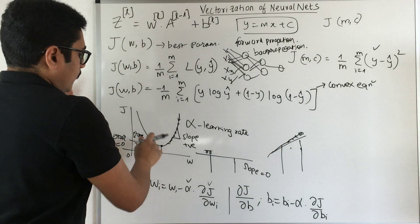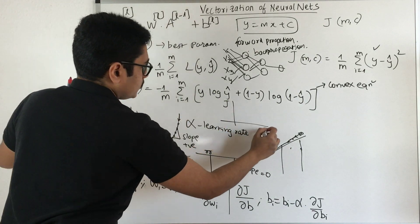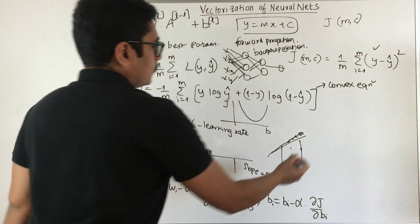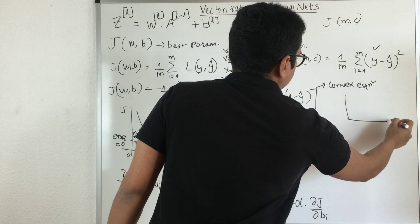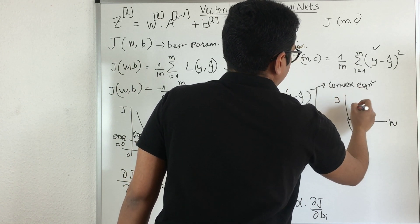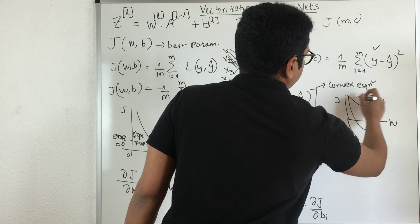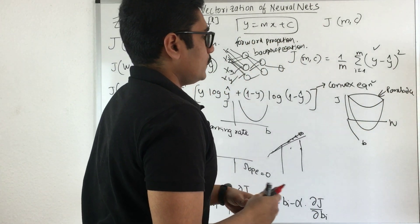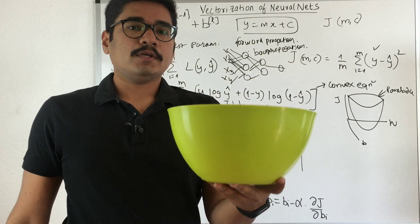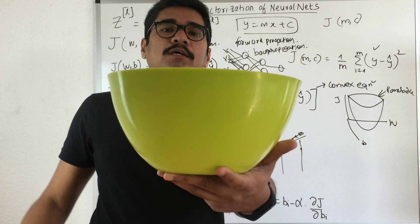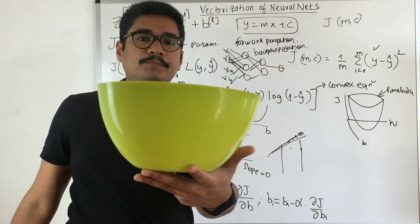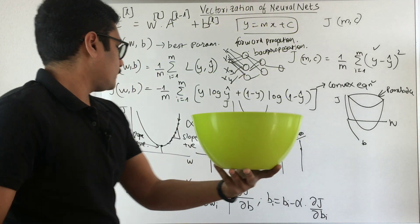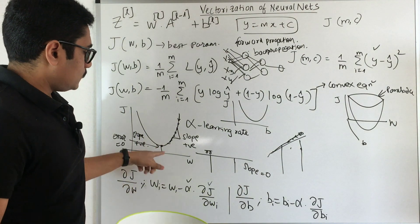Now I have two graphs like this - J with respect to W and J with respect to B. If I club this together, I have weight, bias, and J. In three dimensional space I can get a parabola like this, which looks like a bowl shaped curve. From each dimension you can see this particular figure appearing - a parabolic curve where your minimum is at this particular point that you try to achieve.